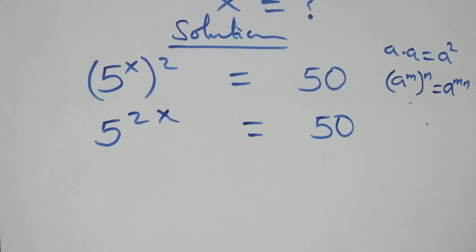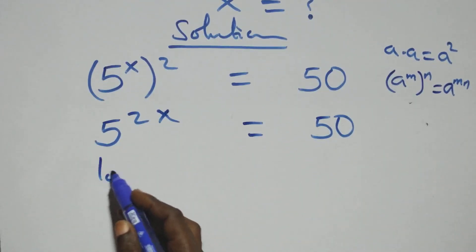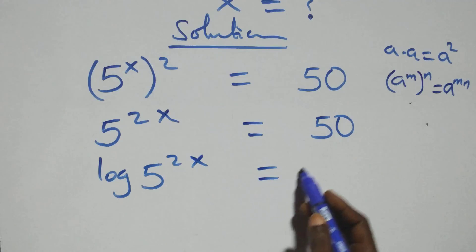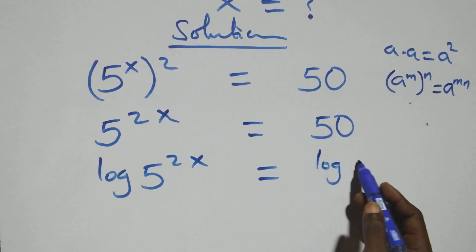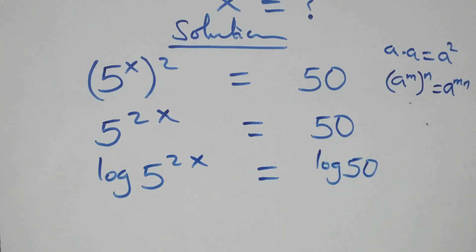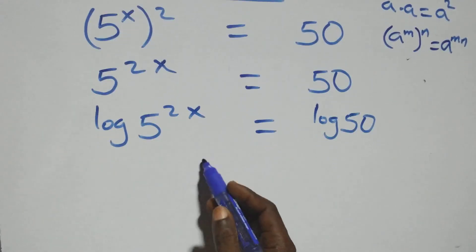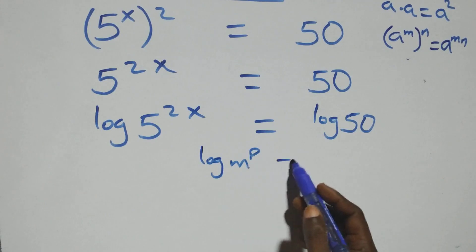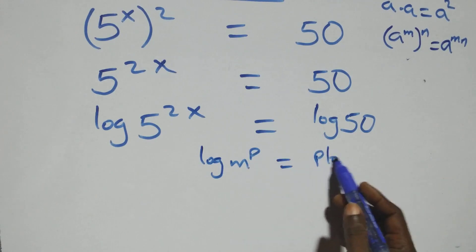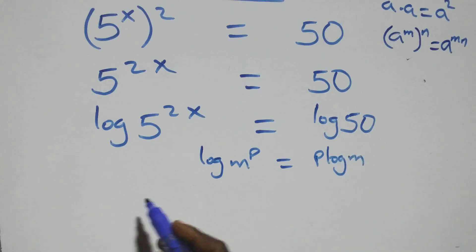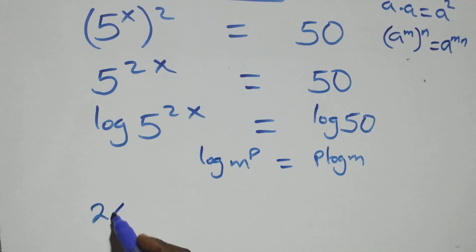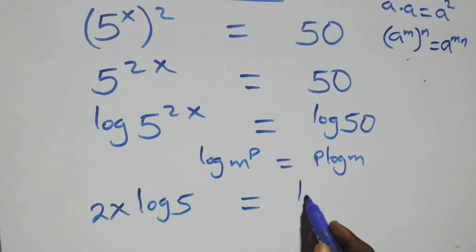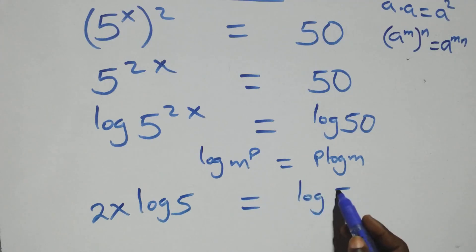The next step: we take the log on both sides, giving us log of 5 raised to power 2x equals log 50. We then apply the power rule of logarithms — when we have log of m raised to power p, this is the same as p times log m — so we get 2x log 5 equals log 50.